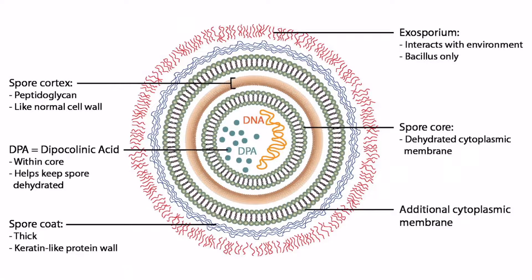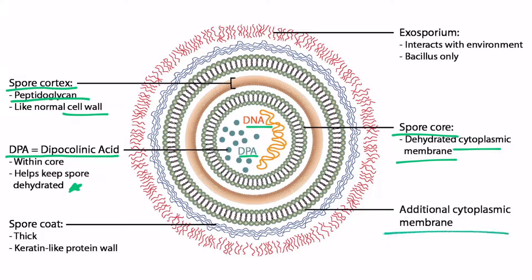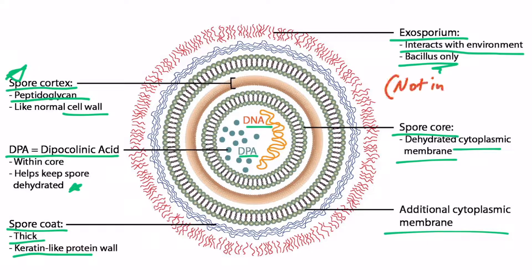This image depicts the endospore. In the center we have the DNA and the dipicolinic acid, which helps keep the spore dehydrated. Outside that is the spore core — just the cytoplasmic membrane. Beyond that is the spore cortex, a peptidoglycan wall. Outside of that is an additional cytoplasmic membrane, then the spore coat made of a keratin-like protein. The most superficial part is the exosporium, present only in Bacillus species — Clostridium species do not form this exosporium.